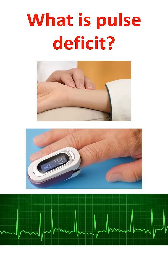What is pulse deficit? Normally, pulse rate and heart rate are equal. When the pulse rate is less than the heart rate, the difference is known as pulse deficit. It usually occurs in a fast irregular rhythm like atrial fibrillation.